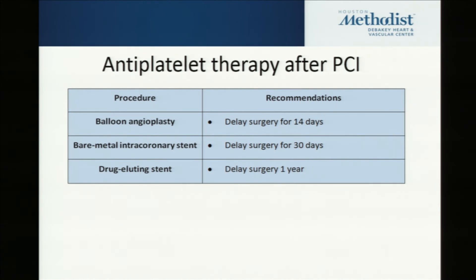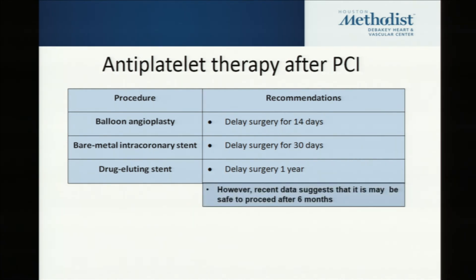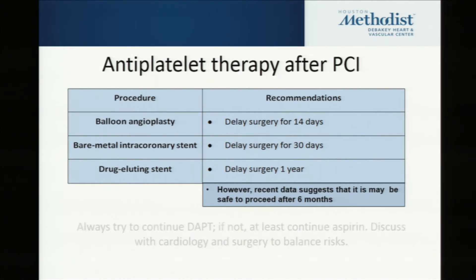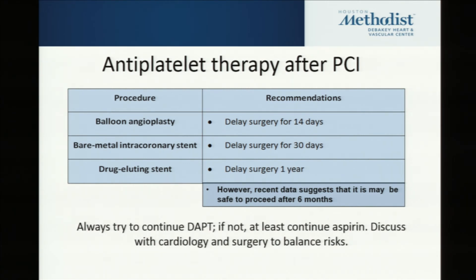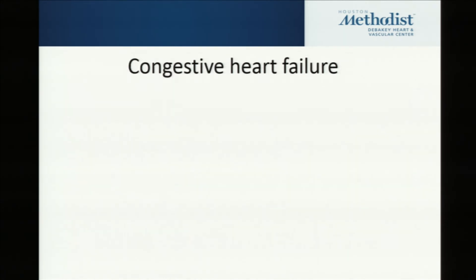The guidelines still recommend delaying surgery for a year after drug-eluting stent placement, if the operation is elective. However, if it's pseudo-elective or there's urgent need, recent studies — as Dr. Clement showed — suggest six months might be okay. But this is an area where you really want a good discussion with the cardiologist and the patient, making a combined decision about whether the operation is important enough to proceed earlier and accept the risk of stopping antiplatelet therapy. That's not a decision made alone — we are frequently involved in helping with those decisions.